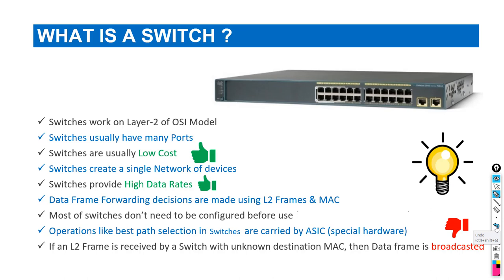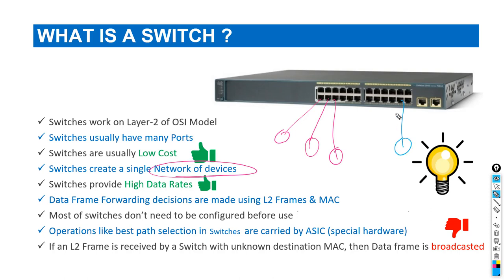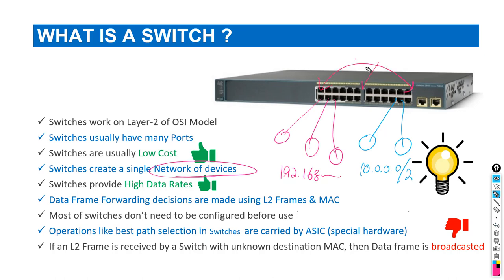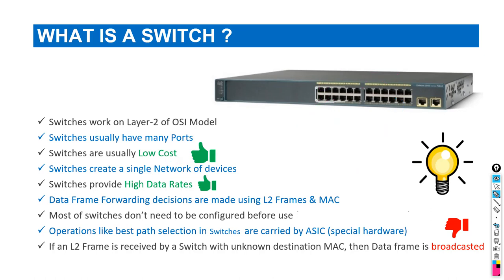Another important point is that switches usually create a single network of devices — it is not possible that some devices belong to one network on a switch and other devices form a separate network or separate subnet. In simple words, it's not possible for some devices to have one kind of subnet and others to have a 192.168-type subnet. If one device belongs to one subnet, the others should belong to the same subnet to communicate, unless you have VLANs, which is a separate topic.